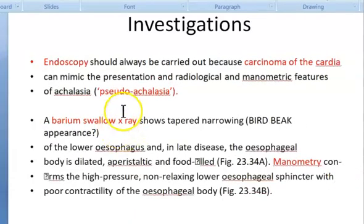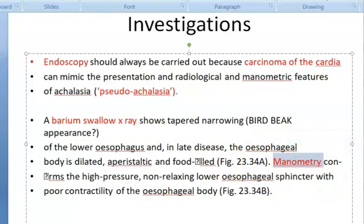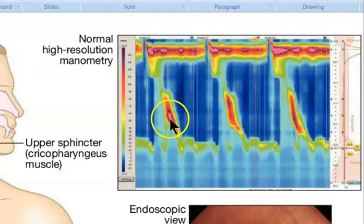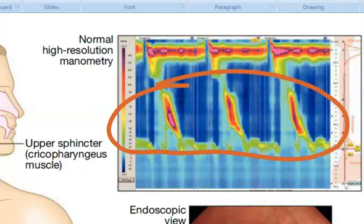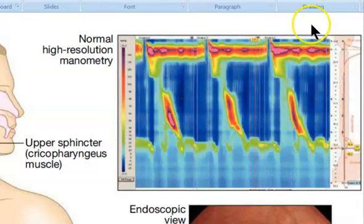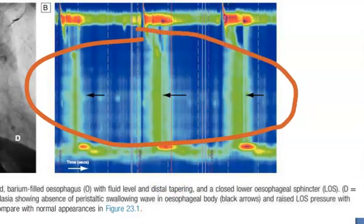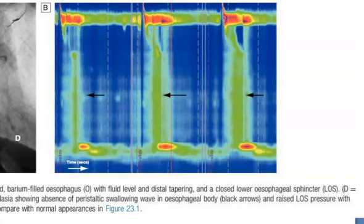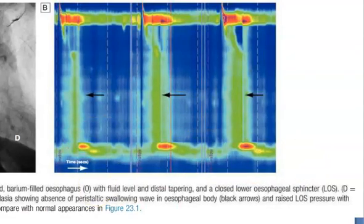Then manometry — pressure measurement. In normal esophageal manometry, you can see the pressure and peristaltic movement. In achalasia of the esophagus, there is absence of peristaltic movement, and the pressure at the lower esophageal sphincter is high. This is esophageal manometry.